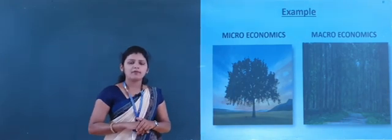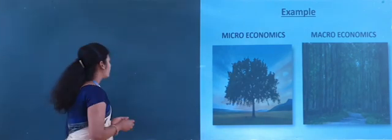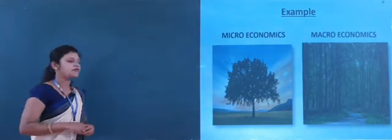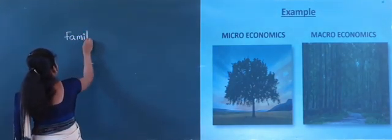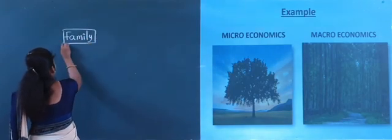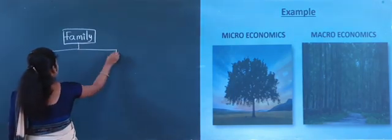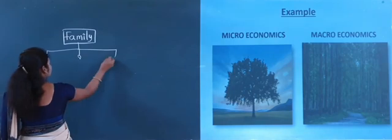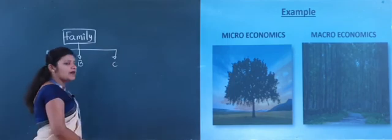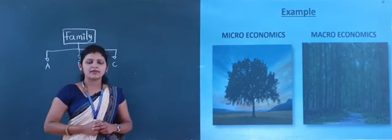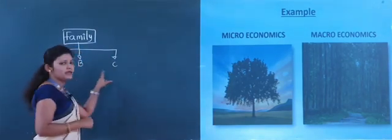To further simplify the meaning of microeconomics and macroeconomics, I will give you one more example using a family. We are going to study the income of a family. In this family there are three members: A, B, and C. To study the income of the family, we need to know the income or earnings of A, B, and C.